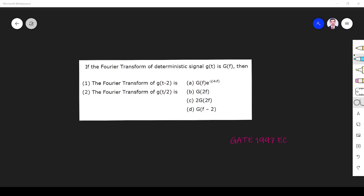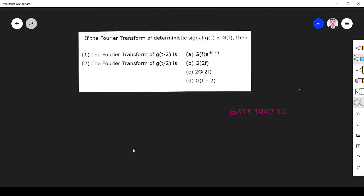Hi friends, in this video I will solve a signals and systems related question asked in the 1997 EC paper. The question is: if the Fourier transform of deterministic signal g(t) is G(f), then what is the Fourier transform of g(t-2) and g(t/2)?